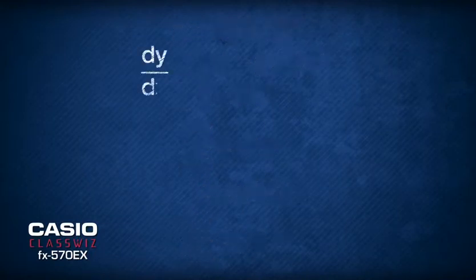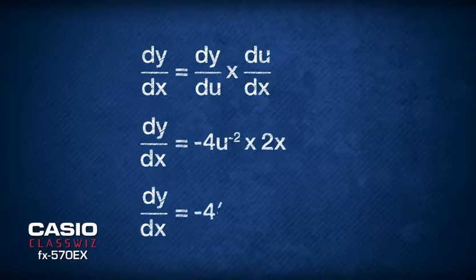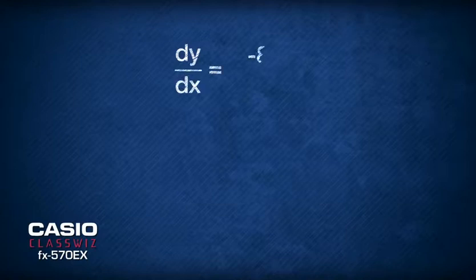Then, using the chain rule formula dy/dx = (dy/du)(du/dx), we insert the two differentials and substitute u back in terms of x. We now have dy/dx = -8x/(x²+1)².